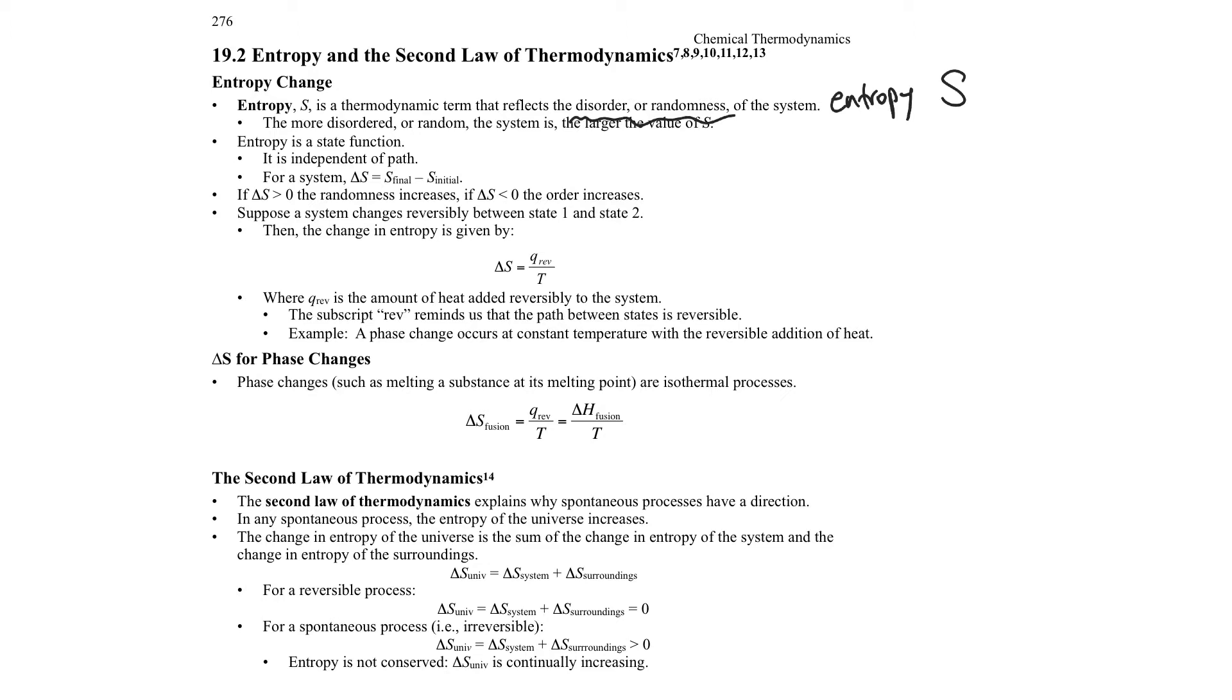It is disorder or randomness in a system. Let's imagine that I have ice where all the molecules are tightly bound together in a matrix, and I melt that ice into water where the water molecules are free to move around each other. That's more random. The entropy has gone up as I've melted that ice. And then if I boil the water into steam, the molecules are even more random. They're all over the place. Gases are very random. So the entropy would go up more.